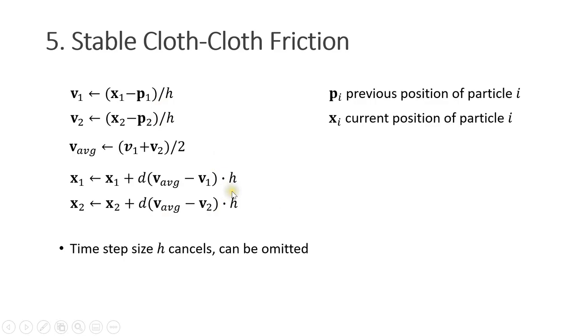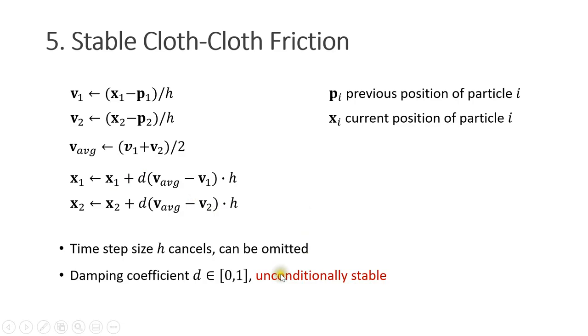d is a damping coefficient between 0 and 1. As you can see, these two statements never overshoot, which means we have an unconditionally stable simulation.